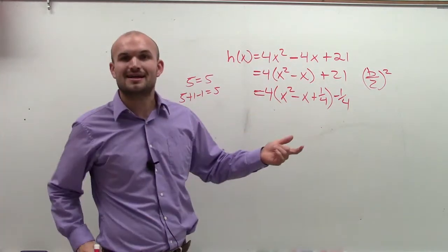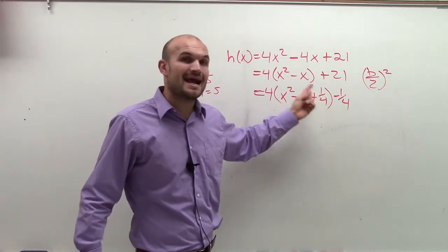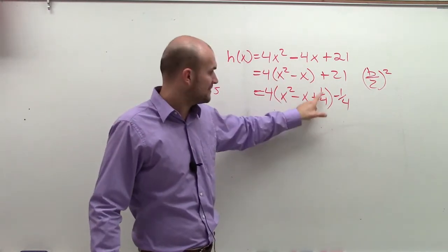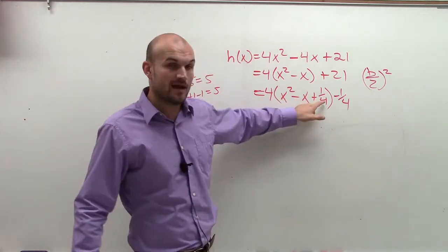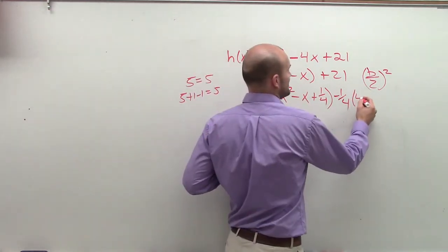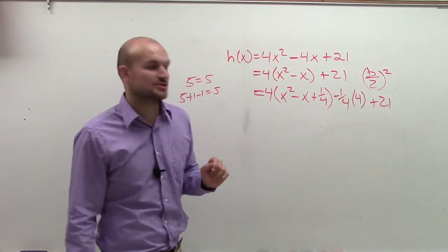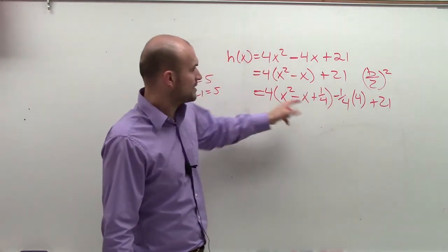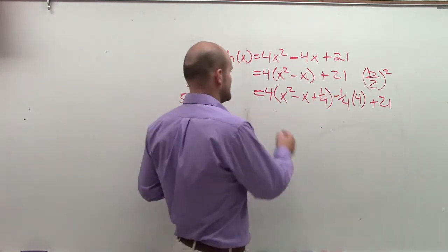Now, here's kind of the kicker. I add 1/4, I subtract 1/4. But I'm not really adding 1/4. By distributive property, that 1/4 is being multiplied by 4. Therefore, I'm actually adding a 1. So I need to make sure I multiply this by 4. And then I can put it in my constant, which is my C. So now, 4 times negative 1/4 is negative 1. Negative 1 plus 21 is 20.